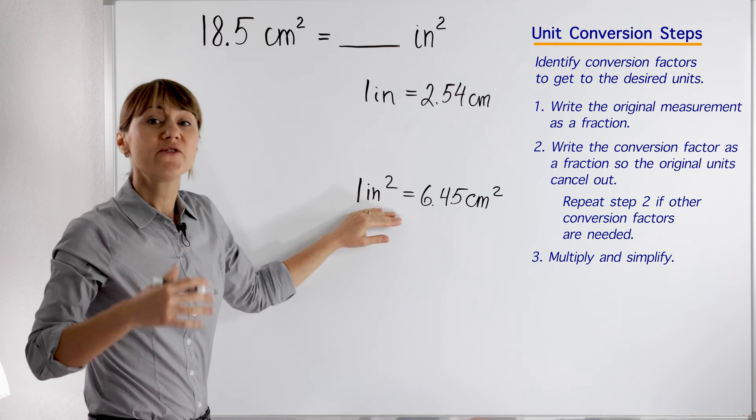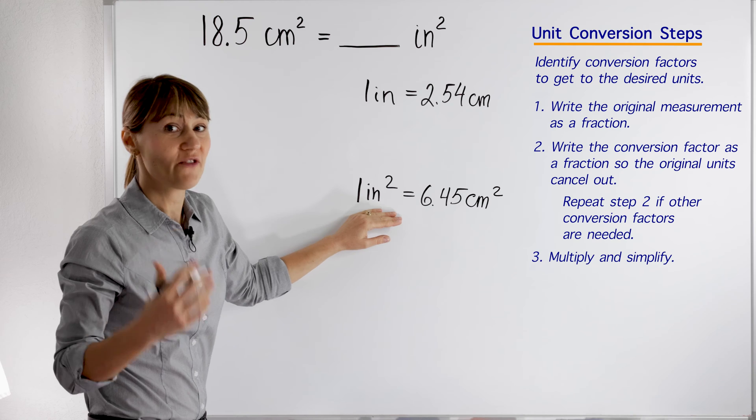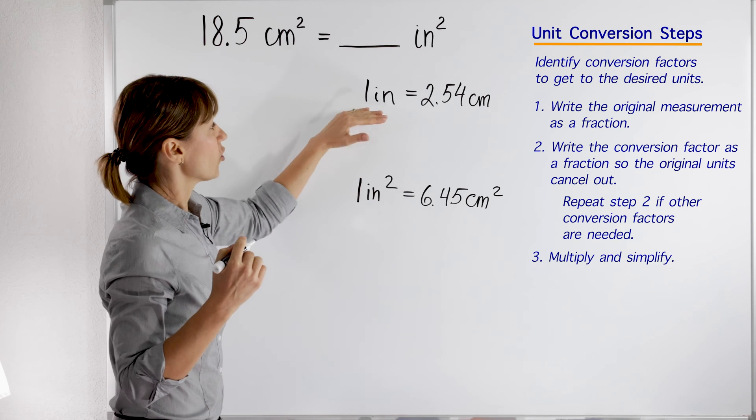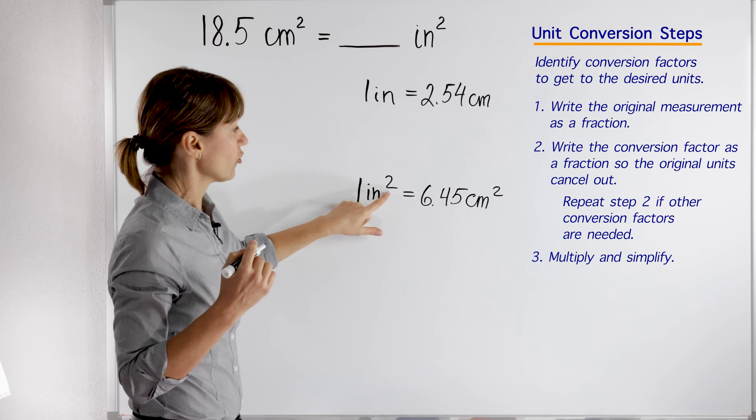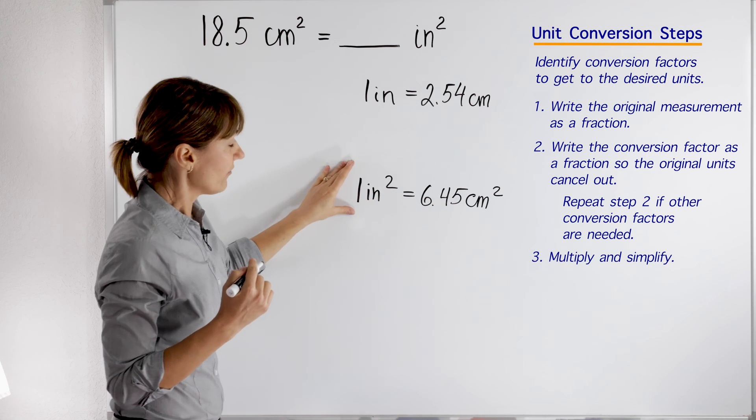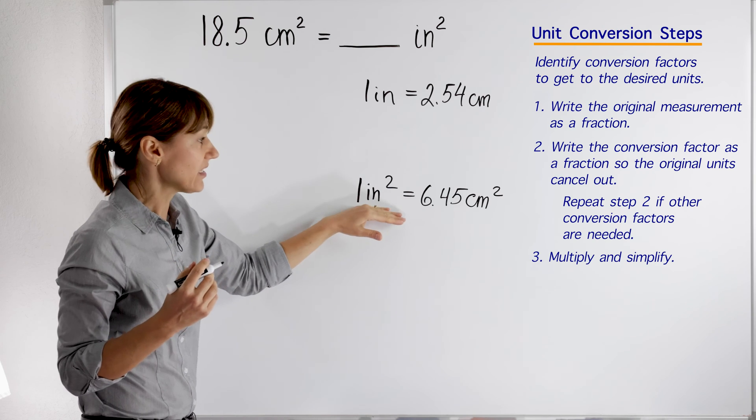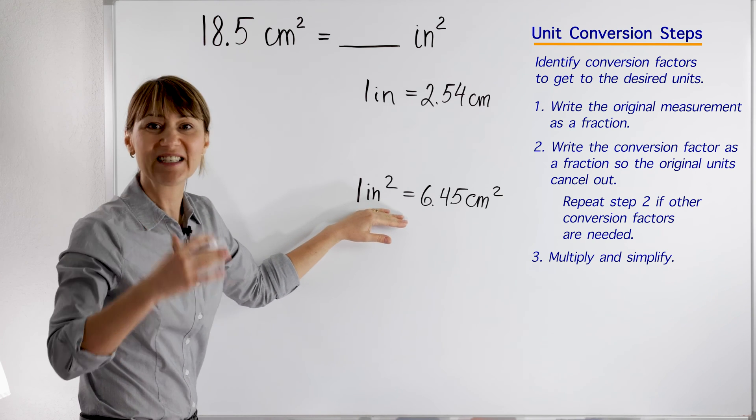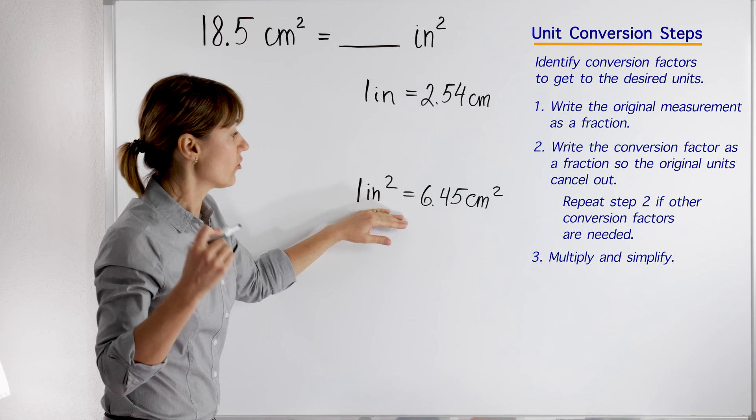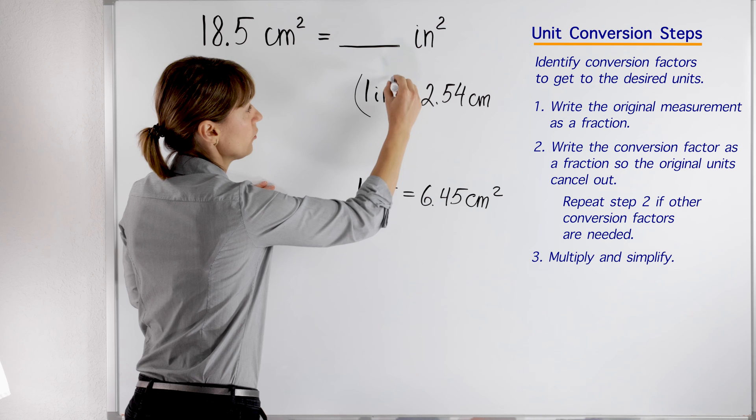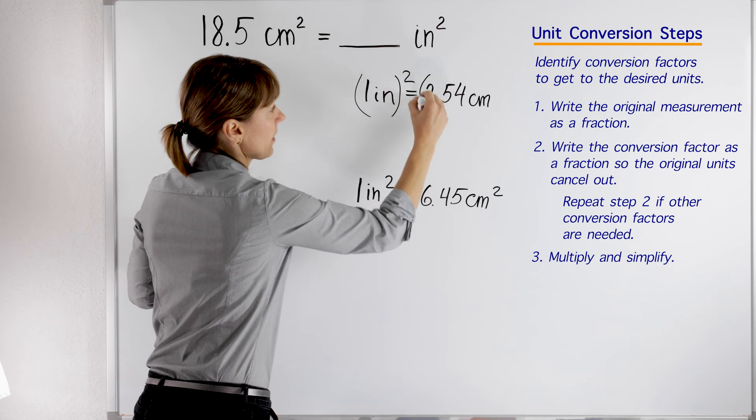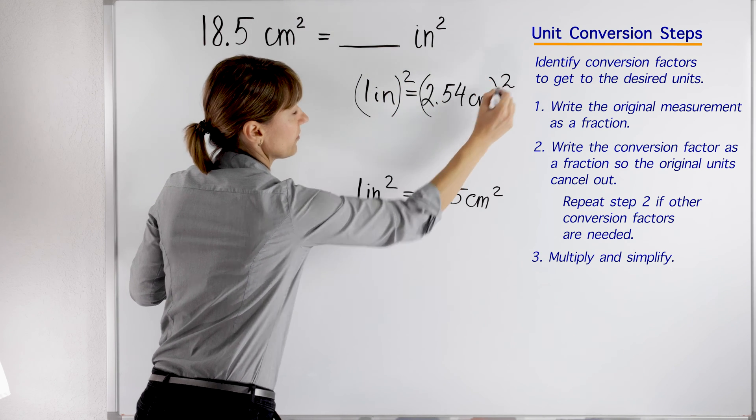What if you don't have this conversion factor? You can square both sides of this conversion factor to change it to square units. If your conversion table has this conversion factor, we are ready to go. But if your conversion table doesn't have square units, this is what you do: you will square both sides.